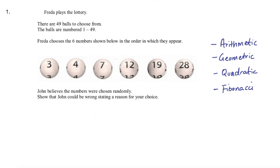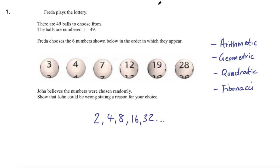Geometric sequences are where you multiply by a number. So we could start with 2 and multiply by 2 to get 4, multiply that by 2 to get 8, then 16, 32, etc.